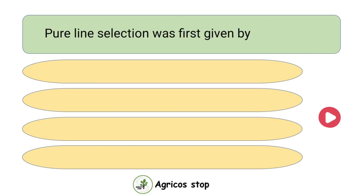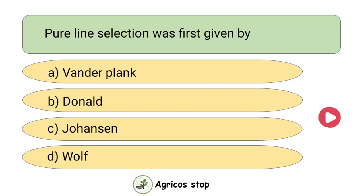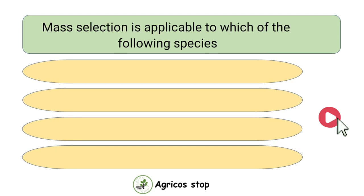Pure line selection was given by? Options are van der Plank, Donald, Johansen, and Wolf. The answer is Johansen. Pure line selection was given by Johansen.